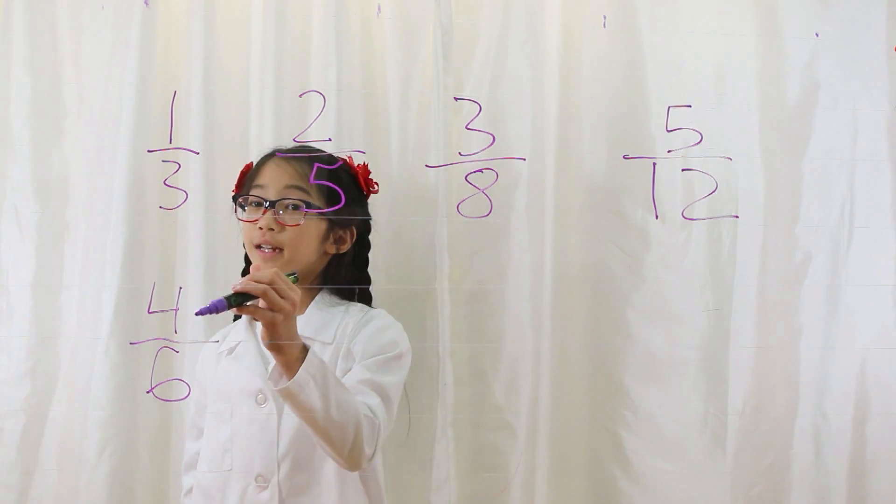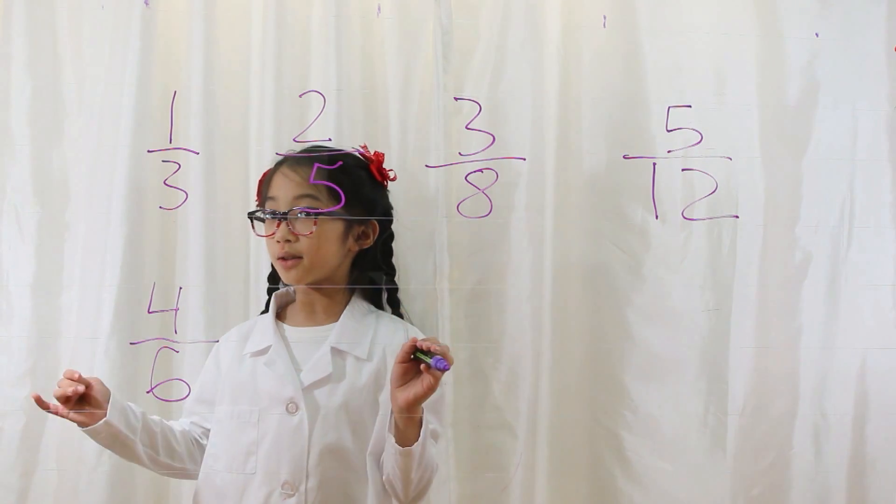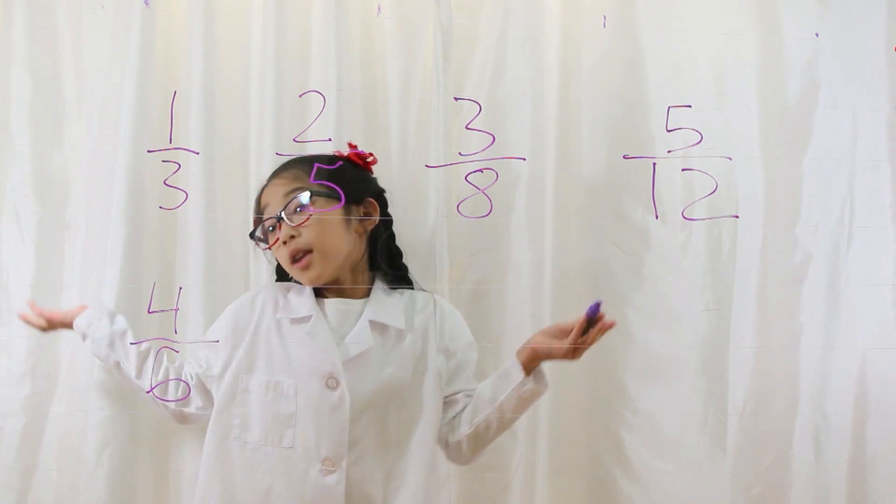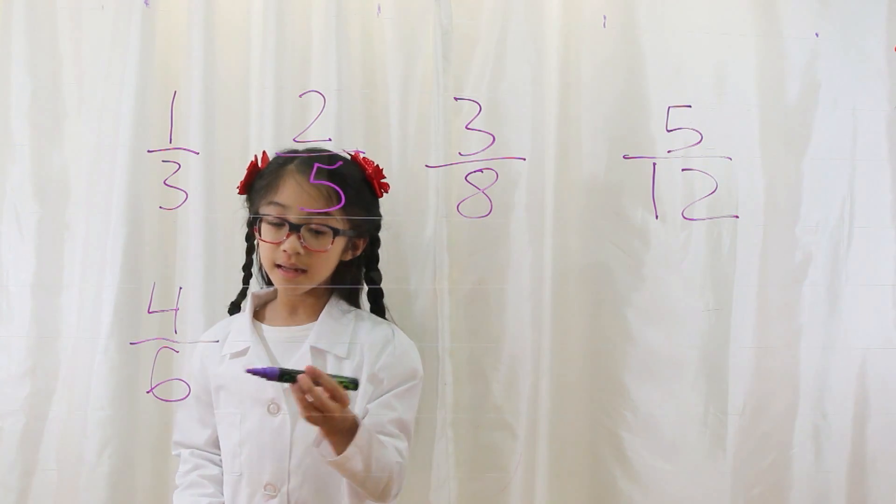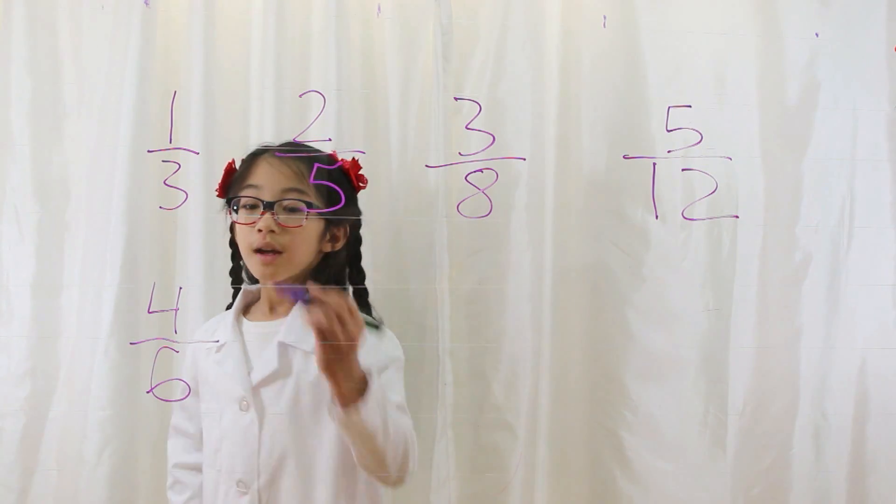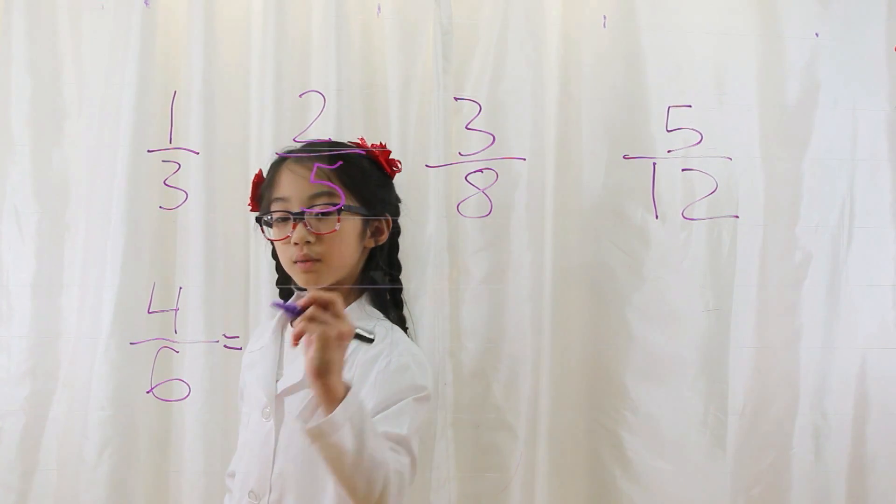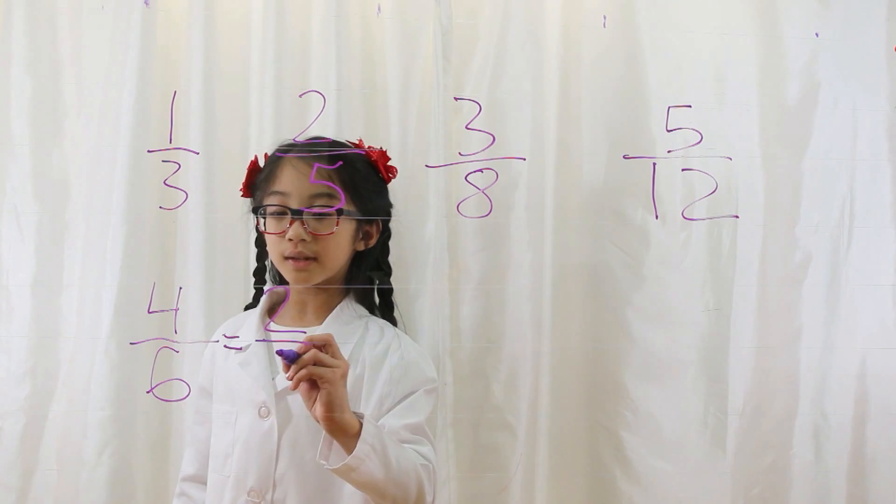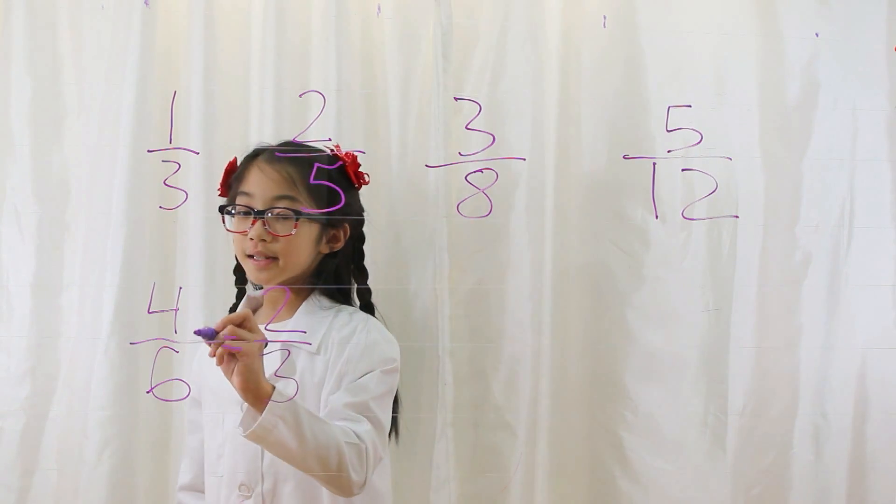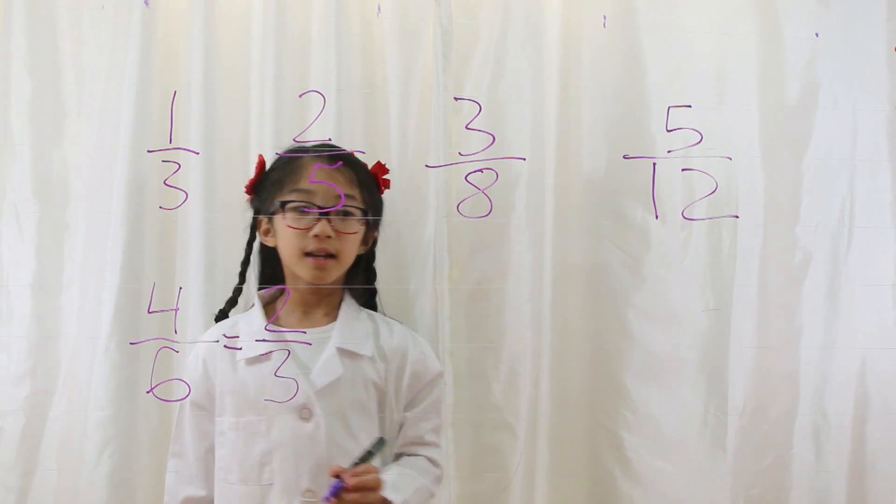Four can divide by four with no remainders, but can six do that? No! So, if four and six are even numbers, then they can both divide by two. Four divided by two equals two, and six divided by two equals three. Four-sixths equals two-thirds.